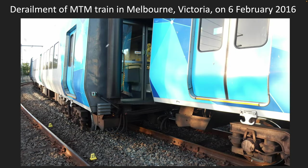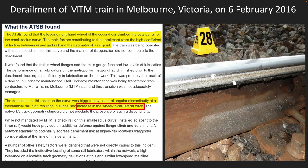Let's look at one example. In Melbourne, Victoria, a train derailed. On investigation by ATSB, which is Australian Transport Safety Board, they found the derailment was due to increase in wheel to rail lateral force.